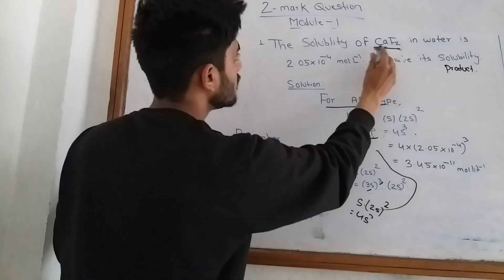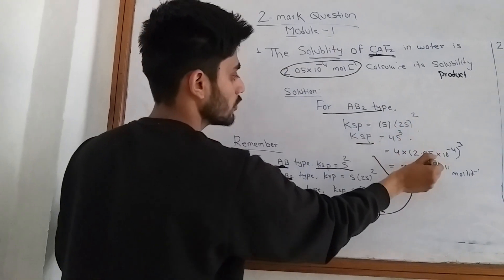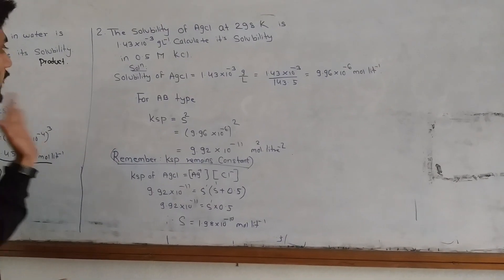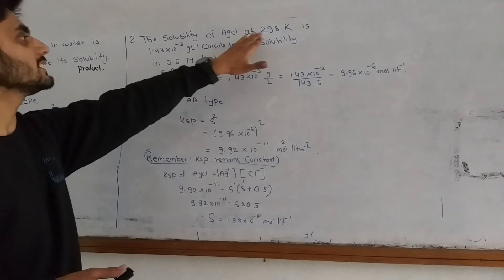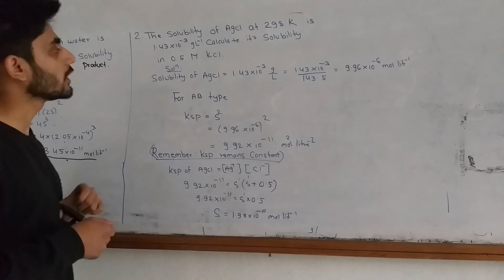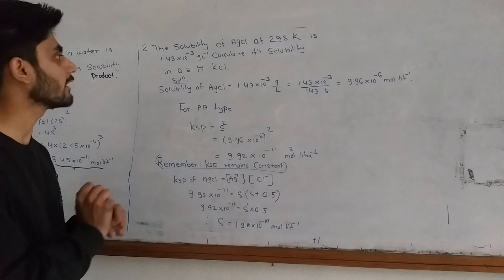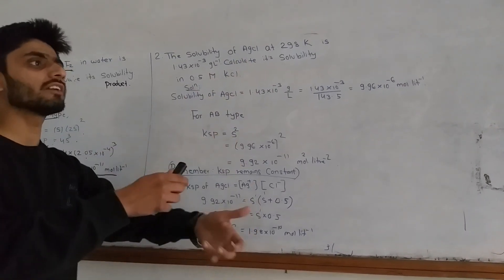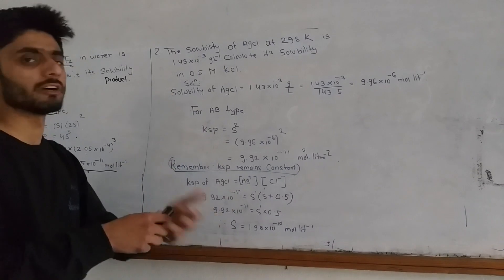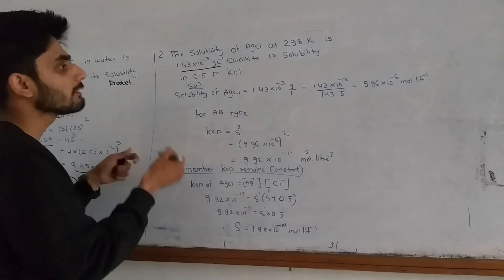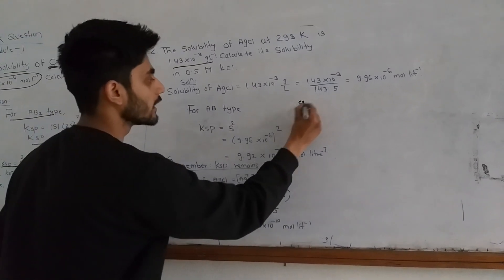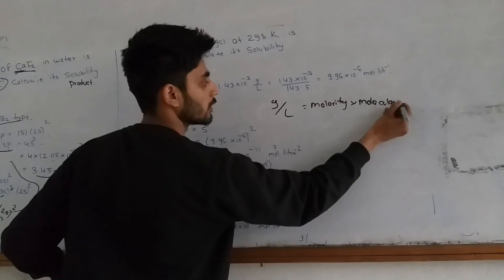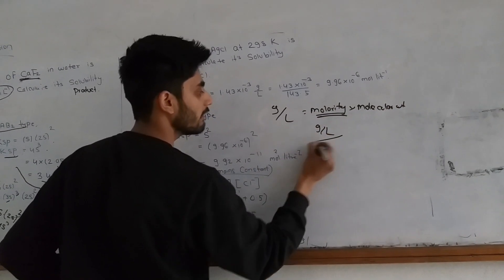KSP equals 4S cubed. Solubility is equal to S. Calculate solubility in 0.5 molar KCl. At 298 Kelvin, it is 1.43 times 10 to the power minus 3 grams per liter. Calculate its solubility in 0.5 molar KCl.